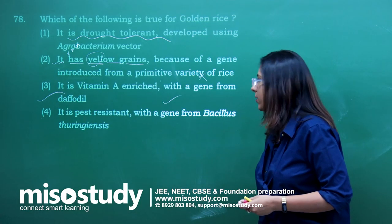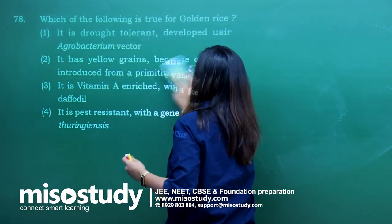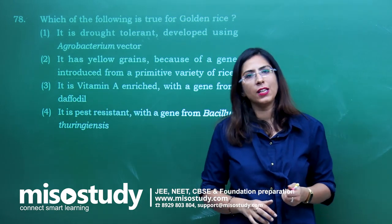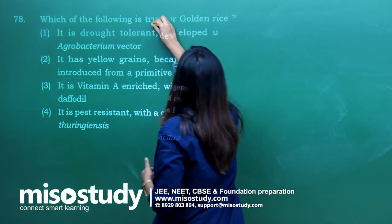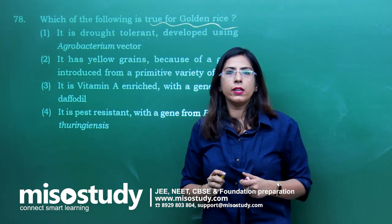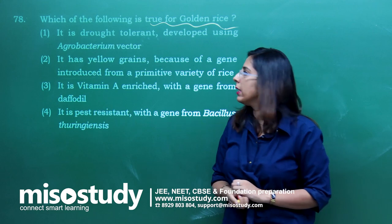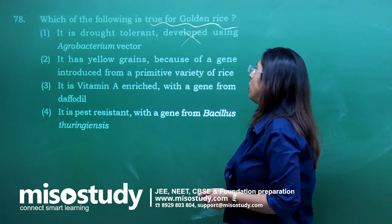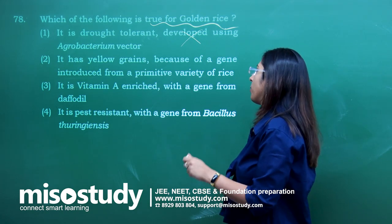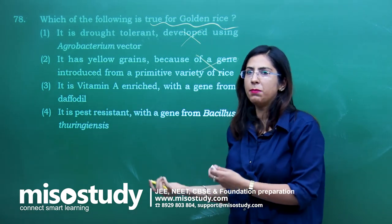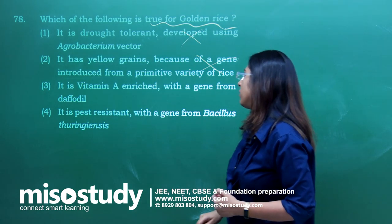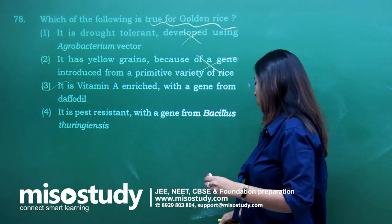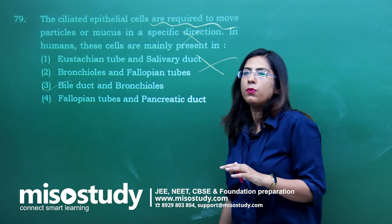Question number 78 — which of the following is true for golden rice? Golden rice is not drought tolerant. It has a golden colour because of beta carotene. It is not because of a gene from a primitive variety of rice. Golden rice is vitamin A enriched with a gene from daffodil — this option is correct. It is not pest resistant. The correct answer is option 3.